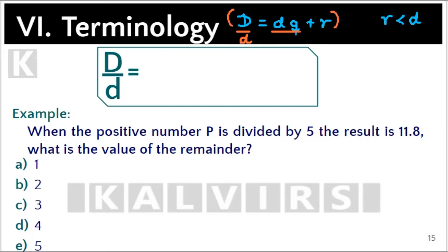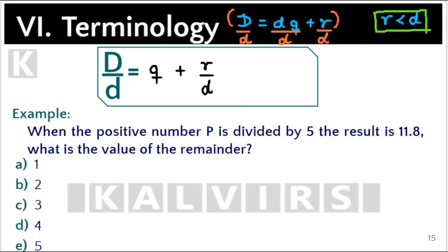Dividing each term by the divisor, we have: the dividend over the divisor equals the quotient plus the remainder over the divisor. Remember that since the remainder is always smaller than the divisor, the fraction remainder over divisor will always be between 0 and 1.